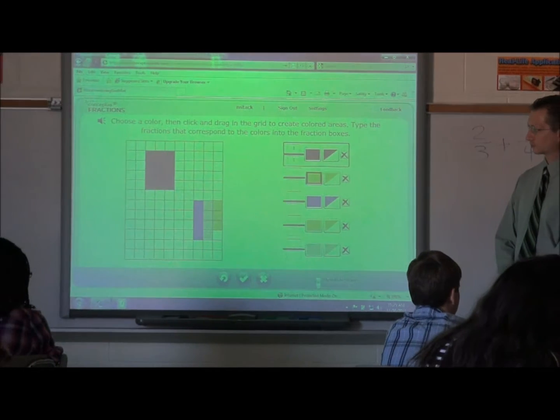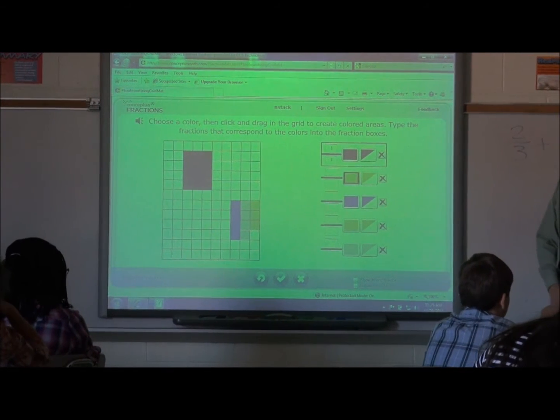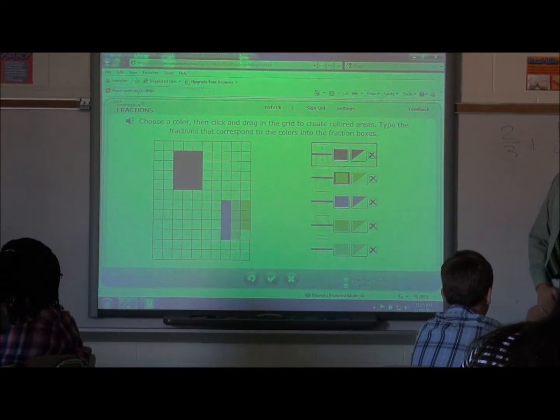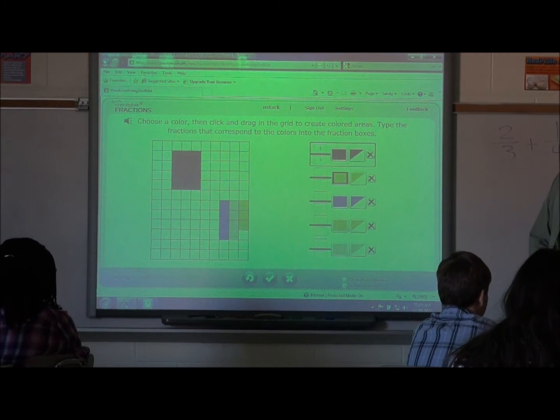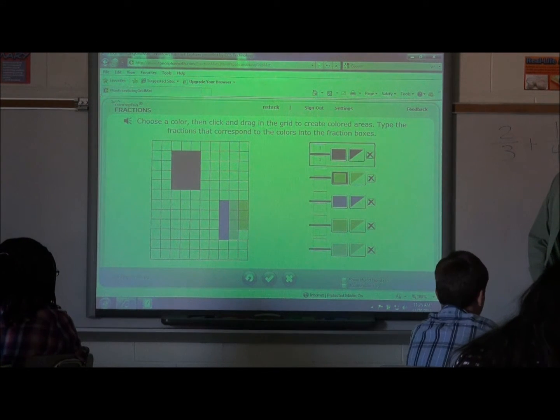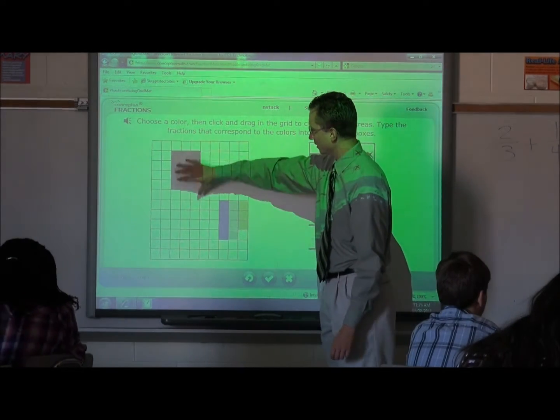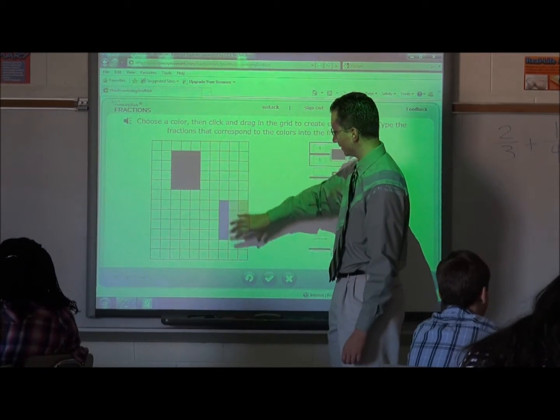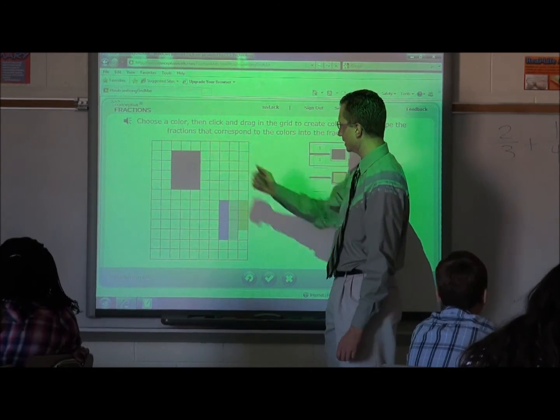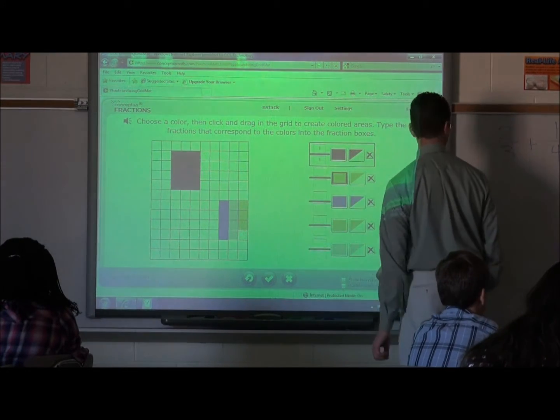It has a block missing out of it. And if we had that block there, it would look exactly like the one above it. So we know it's eleven twelfths. Okay. So because we're missing one of these pieces, we know that this is twelve pieces total. This makes eleven. So we've got eleven out of our total, which would have been twelve.